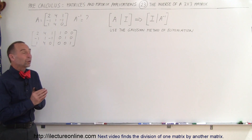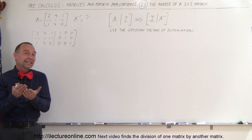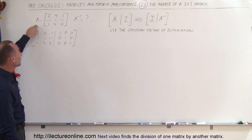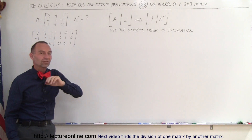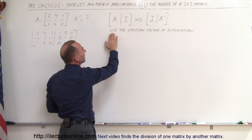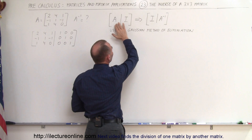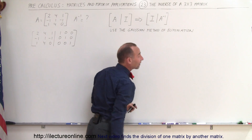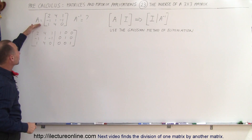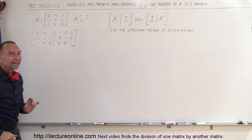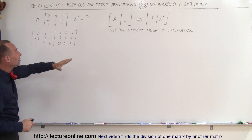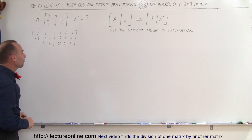Welcome to ElectronLine. In this video we're going to apply the general method of finding the inverse of a matrix to a 3x3 matrix. The approach is that we take the matrix and augment it with the identity matrix, then use the Gaussian method of elimination to turn the left side into the identity matrix, which causes the right side to turn into the inverse of the original matrix.